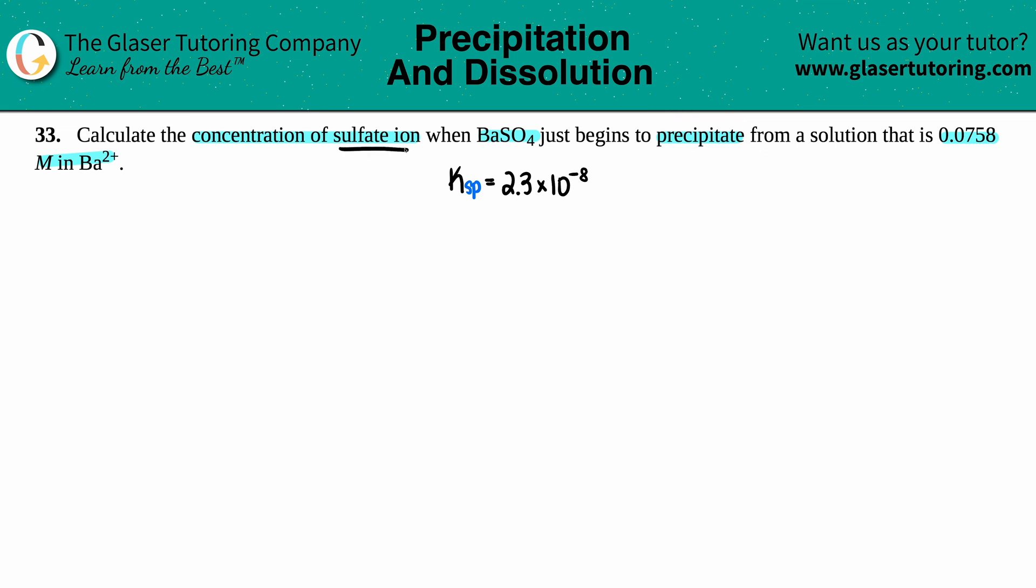We're dealing with Ksp values. I had to go to the back of the textbook to find out what the solubility product constant is for BaSO4. The Ksp is 2.3 times 10 to the negative 8th.